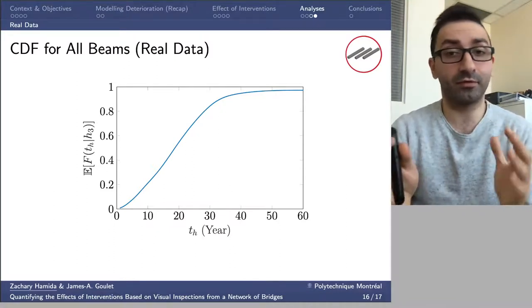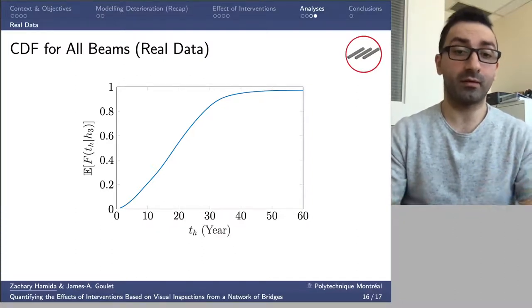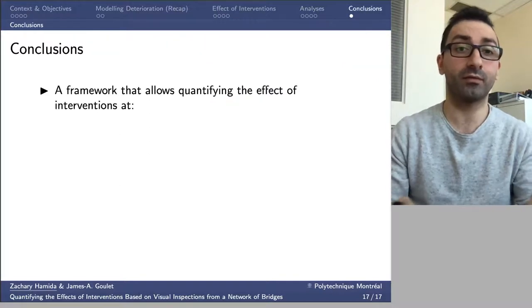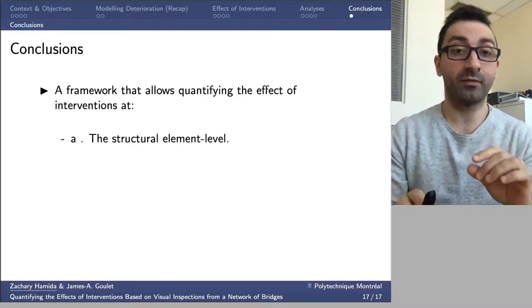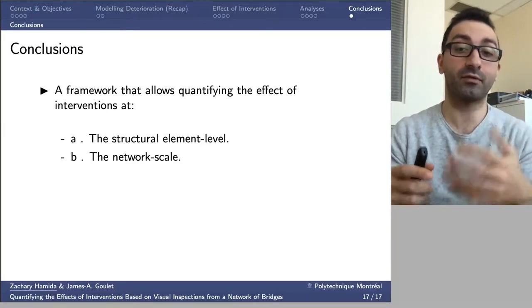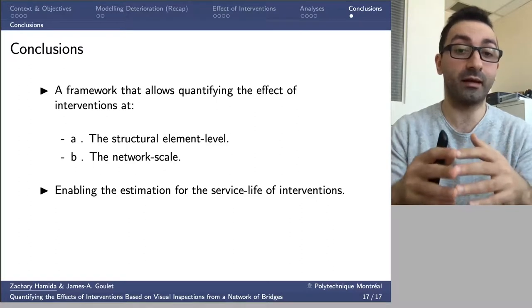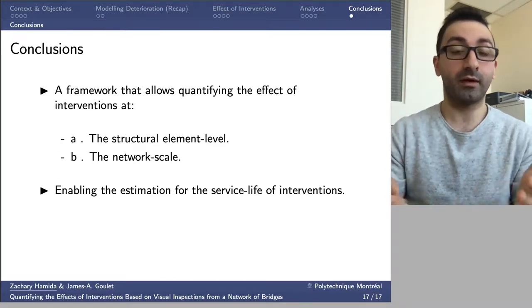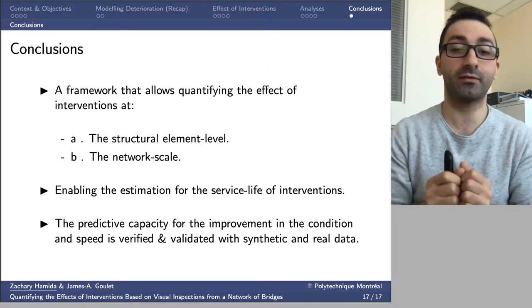Further analysis and methodology descriptions are available in the paper linked in the video description. In conclusion, this study proposes a framework to quantify the effect of interventions locally for each structural element, and globally on a network scale, providing prior knowledge about the effect of a given type of intervention. We've enabled estimation of the service life for interventions, and the predictive capacity for improvement in condition and speed has been verified and validated with synthetic and real data respectively.